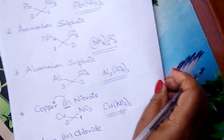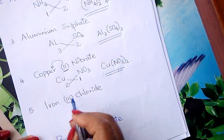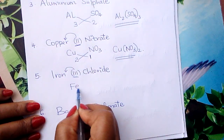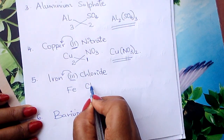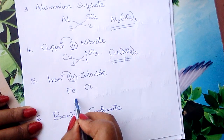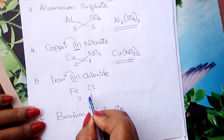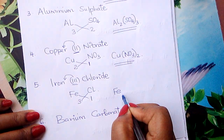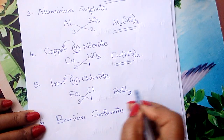We go to iron(III) chloride. The 3 is the valency for iron. Symbol for iron is Fe. Chlorine symbol is Cl. Valency for iron is 3, chlorine from the valency song is 1. Interchange: Fe takes 1 — no need to write 1. Cl takes 3 — it is not a radical, so you just write Cl₃. Formula is FeCl₃.